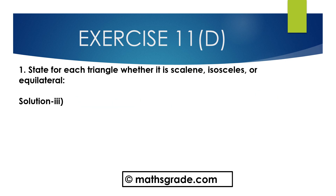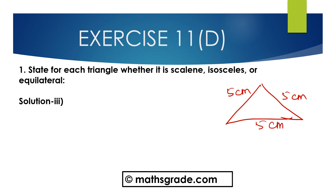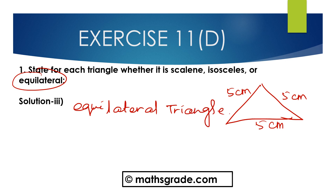Now Question No. 3. First, draw the given triangle. This triangle is given with sides 5 cm, 5 cm, and 5 cm. In this triangle, all three sides are equal, that is 5 cm. We know any triangle whose all three sides are equal is said to be an equilateral triangle. So this is an equilateral triangle.